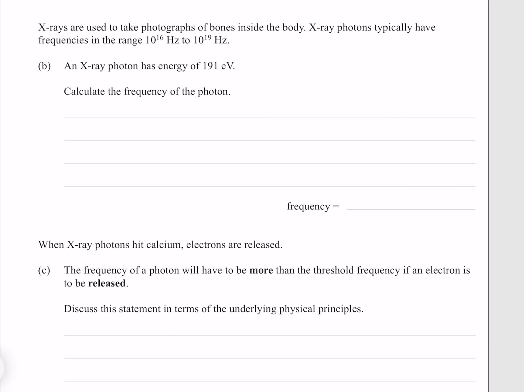X-rays are used to take photographs of bones inside the body. X-ray photons typically have frequencies in the range of 10 to the 16 to 10 to the 19 hertz.